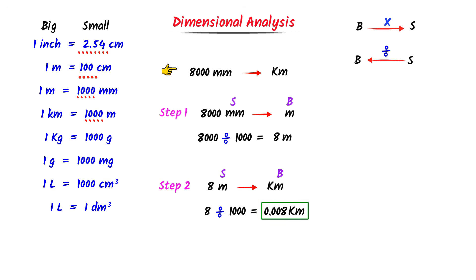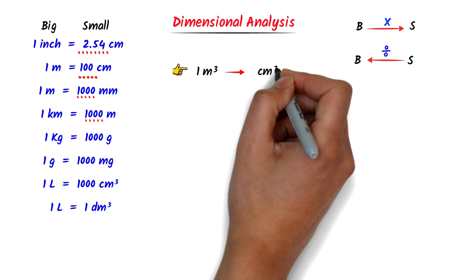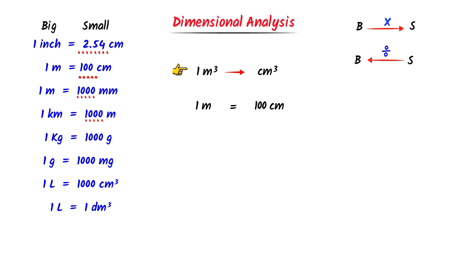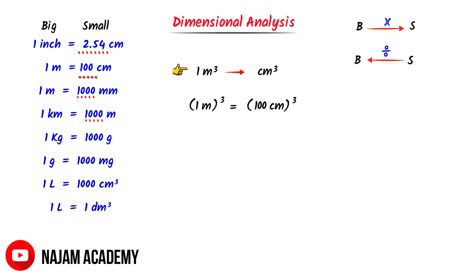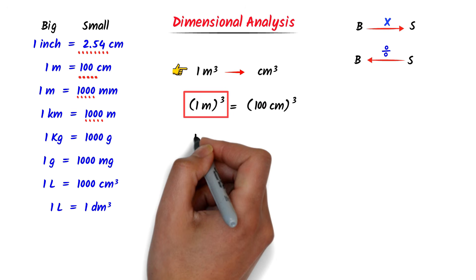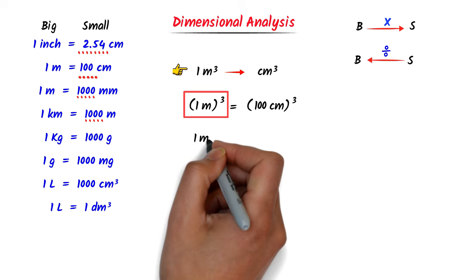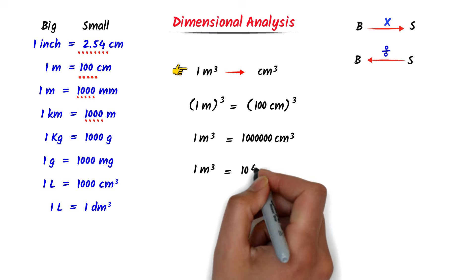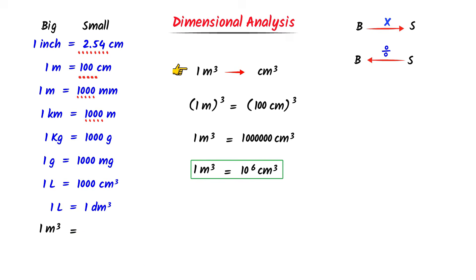Now let me teach you some hard level questions. Convert 1 meter cube to centimeter cube. We already know that 1 meter is equal to 100 centimeters. The trick I personally use is taking the cube on both sides. On the left side, 1 cubed is 1 and meter cubed is meter cube. On the right side, 100 cubed means I write 1 followed by six zeros — so centimeter cubed is centimeter cube. Thus, 1 meter cube is equal to 1 million centimeter cube, or 10 to the power 6 centimeter cube.